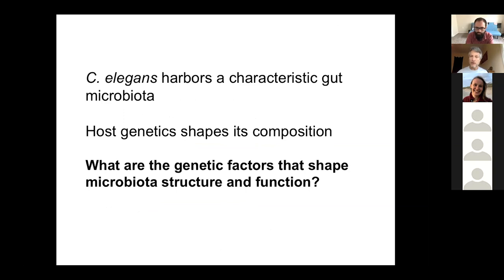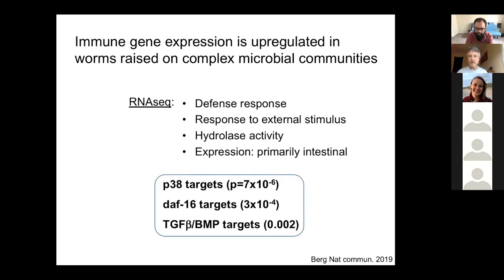We have a characteristic gut microbiome in C. elegans, and host genetics seems to shape its composition to a significant extent. To identify which genes are responsible, we performed an RNA-seq analysis comparing gene expression in worms raised on complex microbial communities versus worms raised on E. coli. We did this in microcosm environments where we could autoclave the environment and add E. coli as a control, allowing apples-to-apples comparisons.